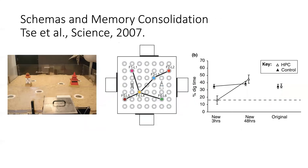Let's look at this experiment in more detail that challenged the standard model of consolidation and brought up the idea of schemas in rodents. This was the setup by Tse et al., who did work with Richard Morris of the Morris water maze. There were food wells and they cued the rat with an odor. It would try to remember which food well had that odor, because digging underneath the sand would yield food. They called these paired associates — each was food paired with a different odor.